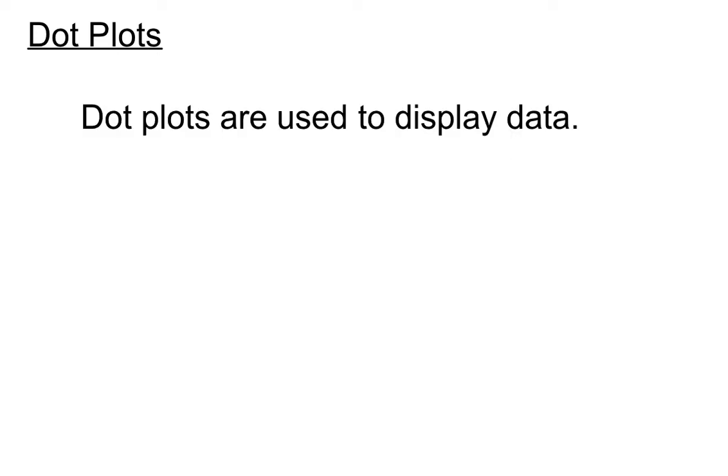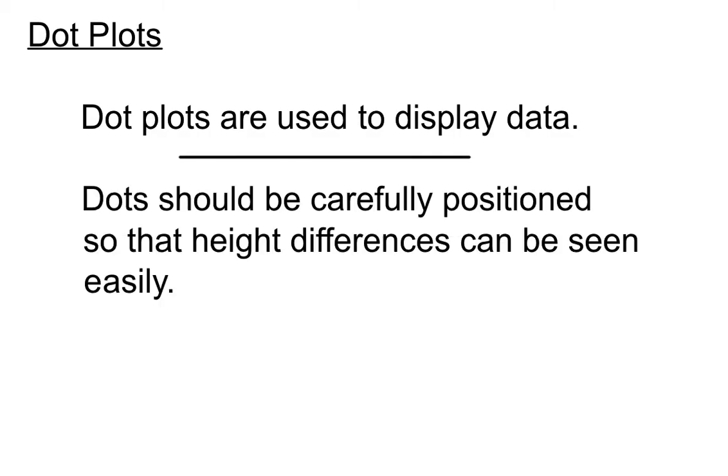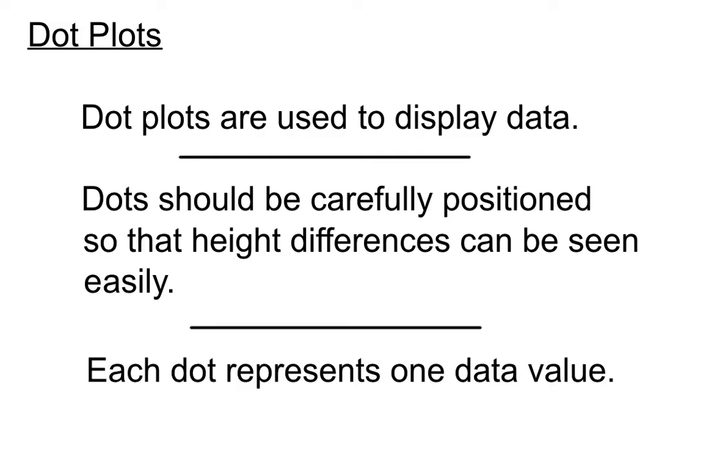Let's have a think about some dot plot points here. Dot plots are used to display data. Dots should be carefully positioned so that the height differences between the numbers can be seen easily. I'll talk about that as we go through an example in a minute. And each dot represents one data value.